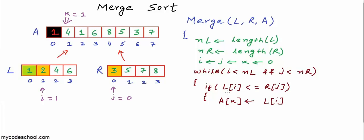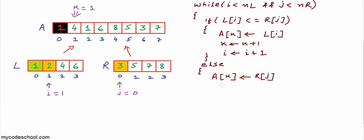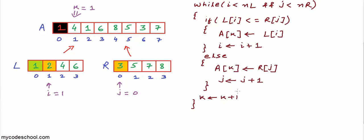We are comparing the smallest unpicked in L with the smallest unpicked in R. In this case, at position k in A we write L[i], then increment k and increment i to go to the next unpicked in L. If this condition is not true — if R[j] is less than L[i] — then A[k] equals R[j], and we increment k and j to go to the next unpicked in R. Since k is incremented in both branches of the if-else, it has been moved out.